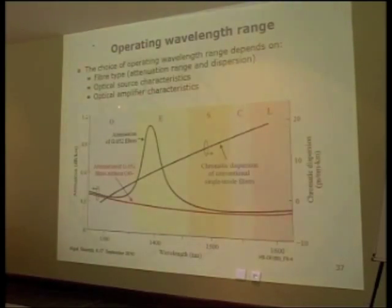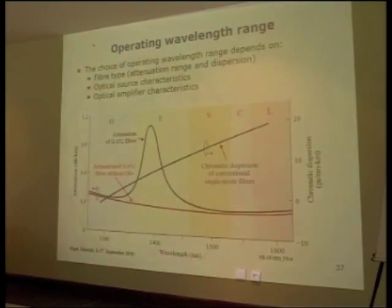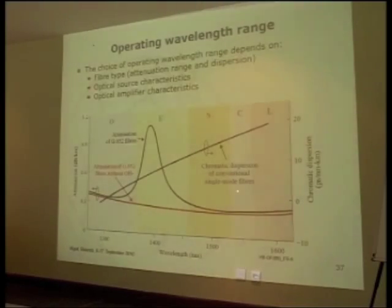The operating wavelength range — the choice depends on fiber type (G.652, G.653, G.655), optical source characteristics such as laser wavelengths at 1.3 or 1.55 micrometers, and optical amplifier characteristics. EDFA normally has gain bandwidth around the C-band, but we can also have L-band amplifiers that shift the gain bandwidth to the L-band region, and very special S-band amplifiers.